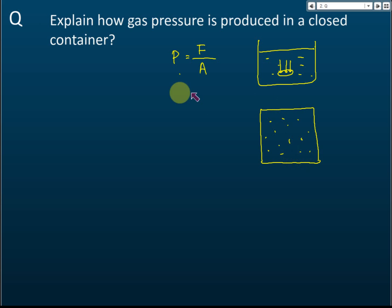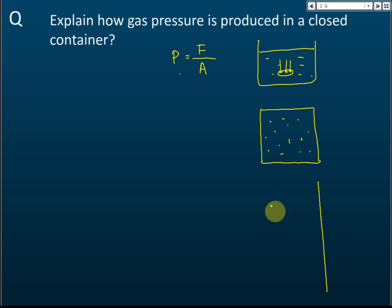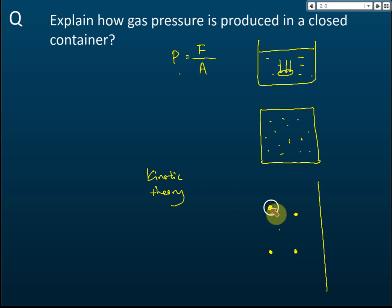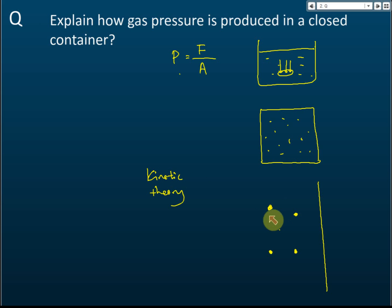So how is gas pressure produced? Pressure is produced when a force acts on an area. Let's say this is the wall of a container, and this is the gas inside. According to the kinetic theory of gases — 'kinetic' means movement — the theory tells us that gas molecules are in constant motion, continuously moving.